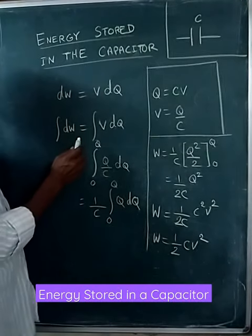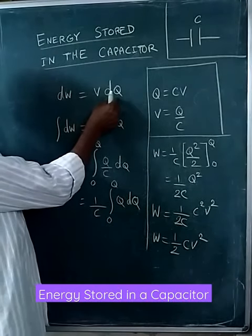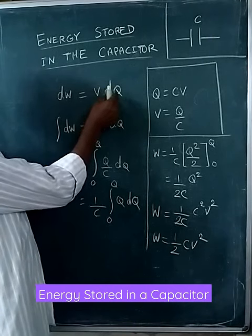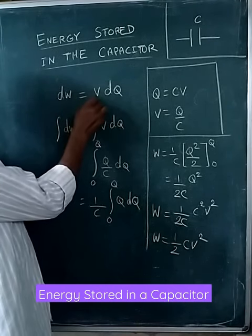Energy stored in the capacitor. Work done in moving a small infinitesimal charge is given by dW equals V times dQ.